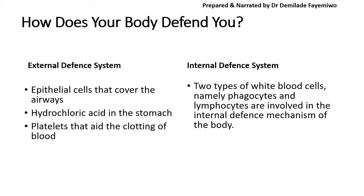Platelets are important because they prevent you from bleeding out. Each person only has about five liters of blood, so it is very important that if you have an injury, platelets ensure your blood clots so you don't bleed out. The internal defense system is the part this chapter focuses on — it focuses on the actions of your white blood cells. Red blood cells carry hemoglobin for transporting oxygen, while white blood cells have a very different function: they are the soldiers of the body, fighting off infection. There are two types — phagocytes and lymphocytes.